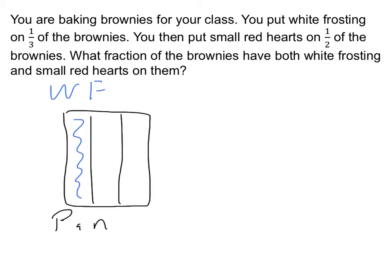But now it says you put small red hearts on a half of the brownies. Notice that it doesn't say we put red hearts on half of the brownies with white frosting — it just says we put small red hearts on a half of the brownies. There are several ways we could do this. Maybe one way is we take the whole pan, divide it in half, and put red hearts up here. That's a possibility.